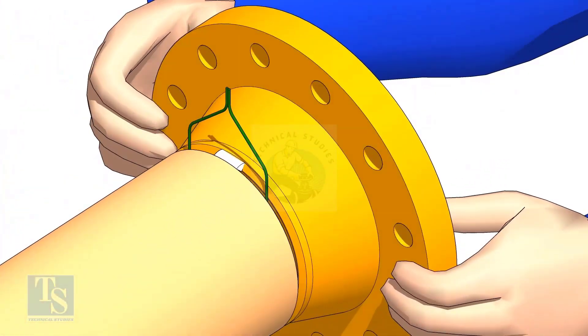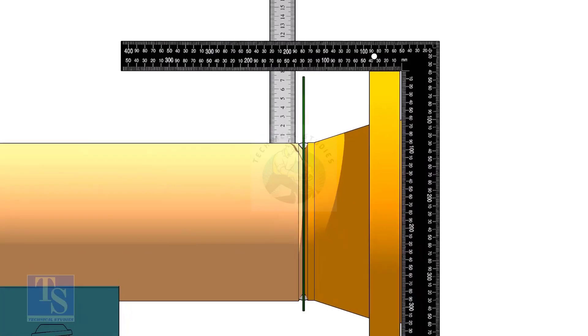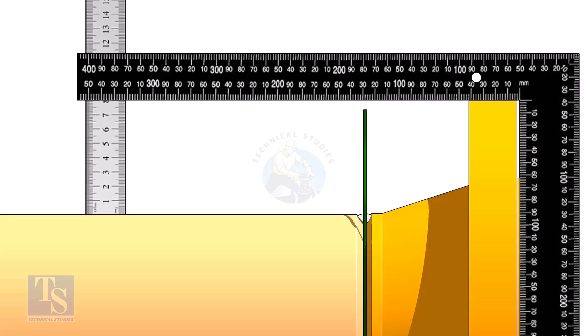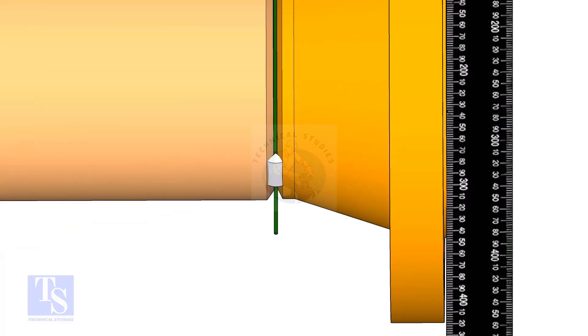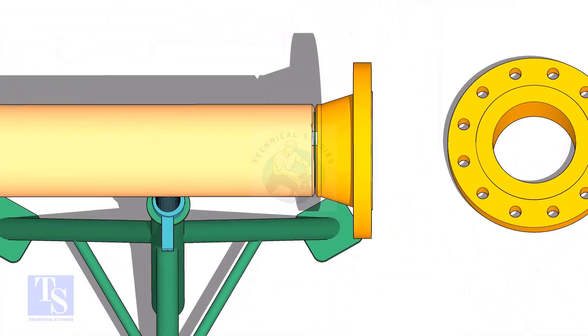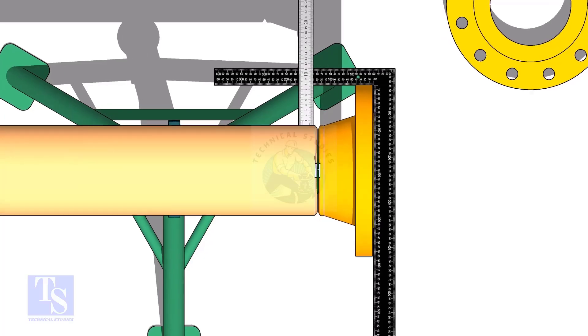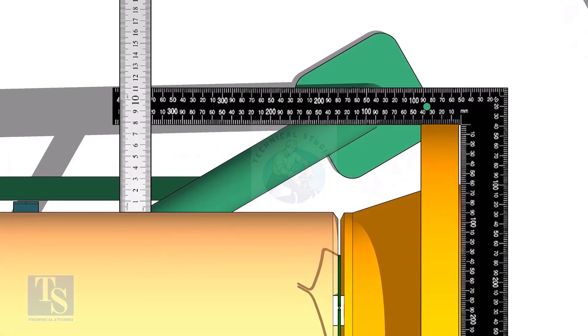Hold the flange with a gap rod in the joint, tack weld on top side of the joint. Check the squareness of flange face to the pipe as shown. Tack weld at the bottom side of the joint. Hold a right angle horizontally and maintain the squareness. Tack weld at both sides of the joint.